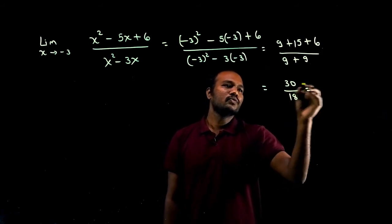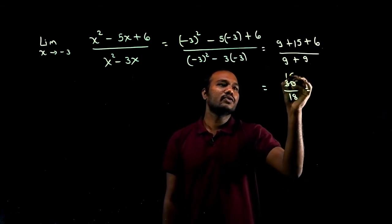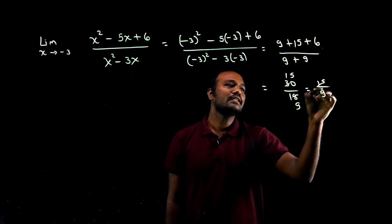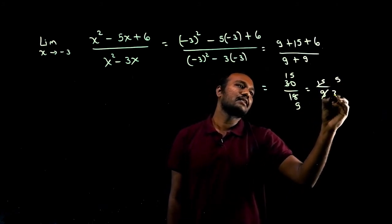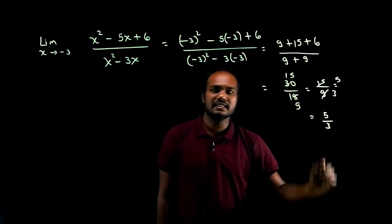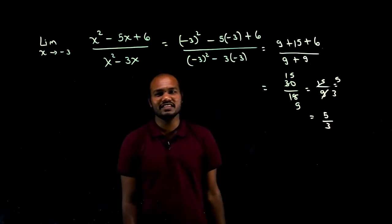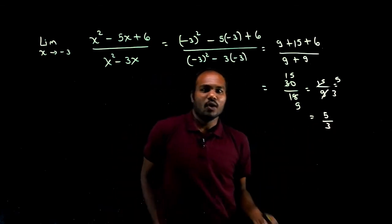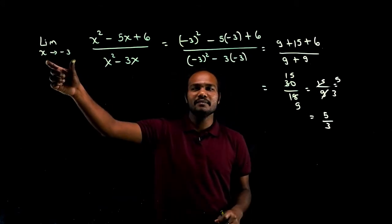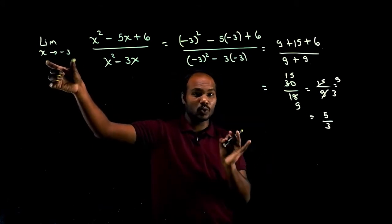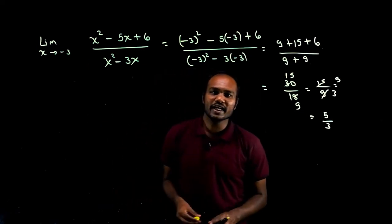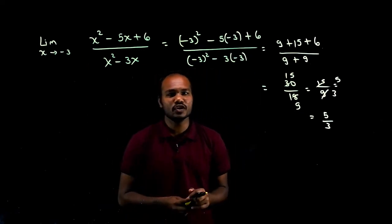So 30 over 18 — we can cancel. 2 goes into both: 15 over 9. We can cancel again: 5 over 3. That's it — the answer is 5/3. This is the simplest question we can find. The only thing you need to know is the golden rule: whenever you see the limit, just substitute the limit, and it is solvable beautifully.